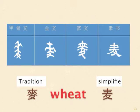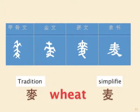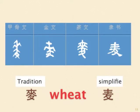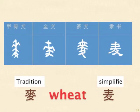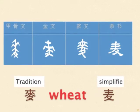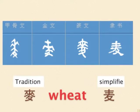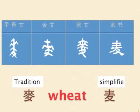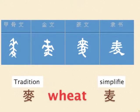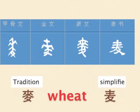Next word: wheat. The ancient word is a picture of a strand of wheat. After a while, it evolved to become the traditional form. The simplified form combines the word 'come', which means wheat comes from foreign countries. In this way, the upper part of the word is simplified.